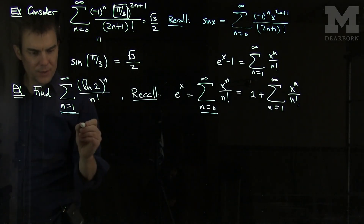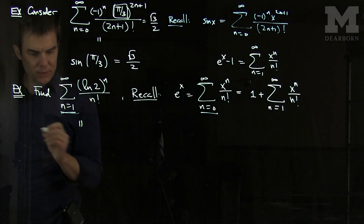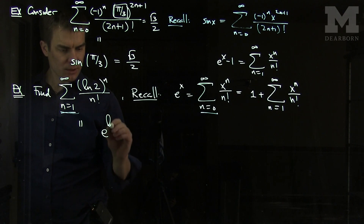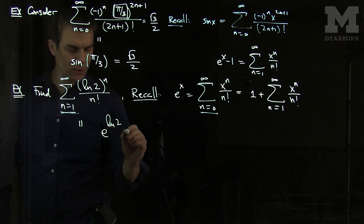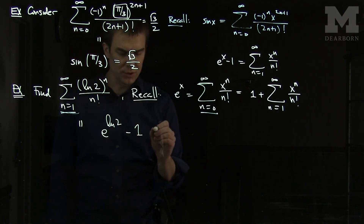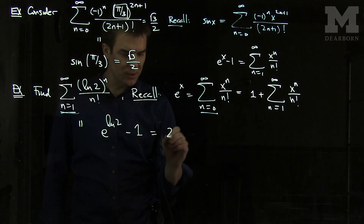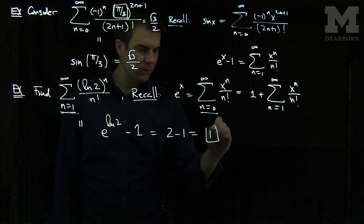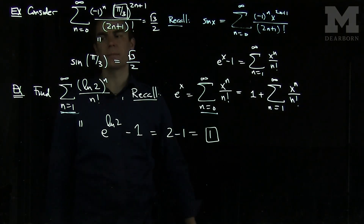So what this series will converge to is e to the log of 2 minus 1. And e to the log of 2 is just 2, so this is going to be 2 minus 1 — this series will converge to 1.